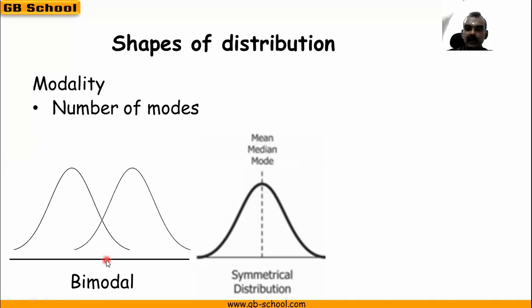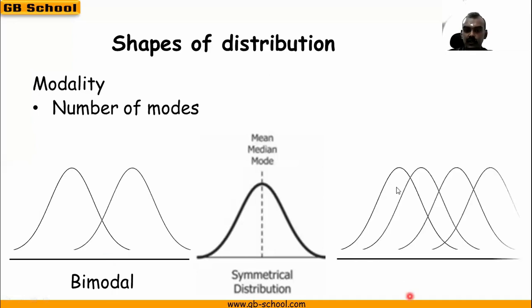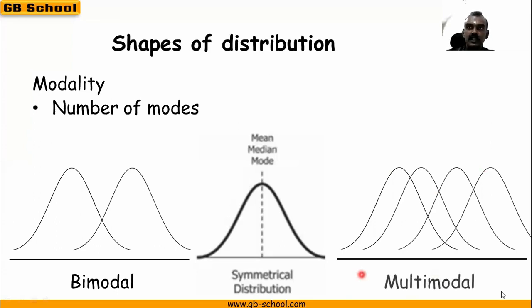Then sometimes we may have a distribution like this also — one, two, three, four — so more than two modes will be there. That is a multimodal distribution.